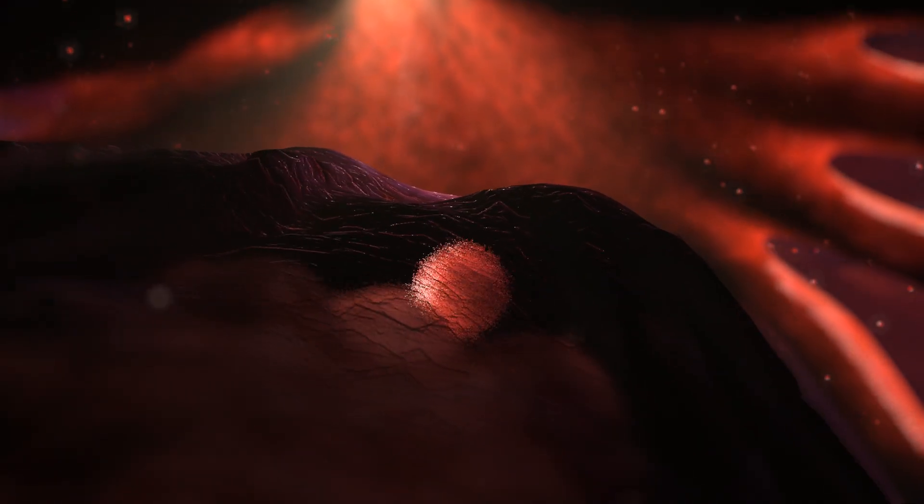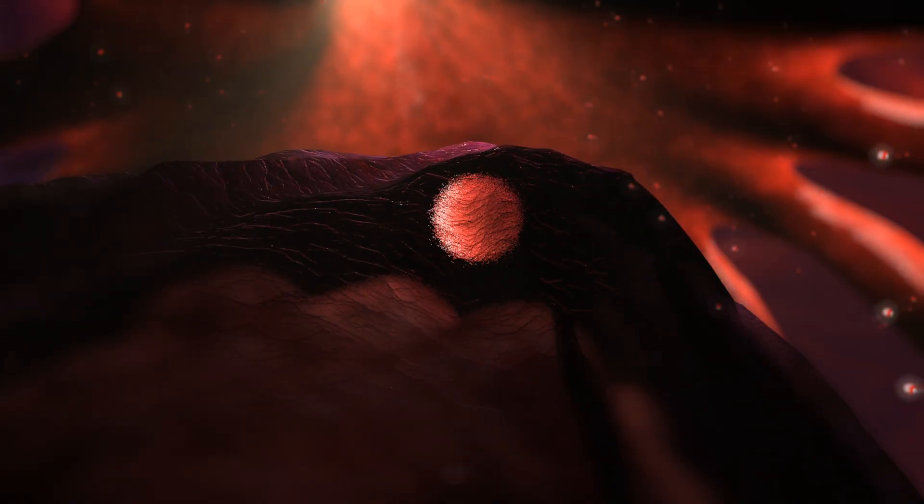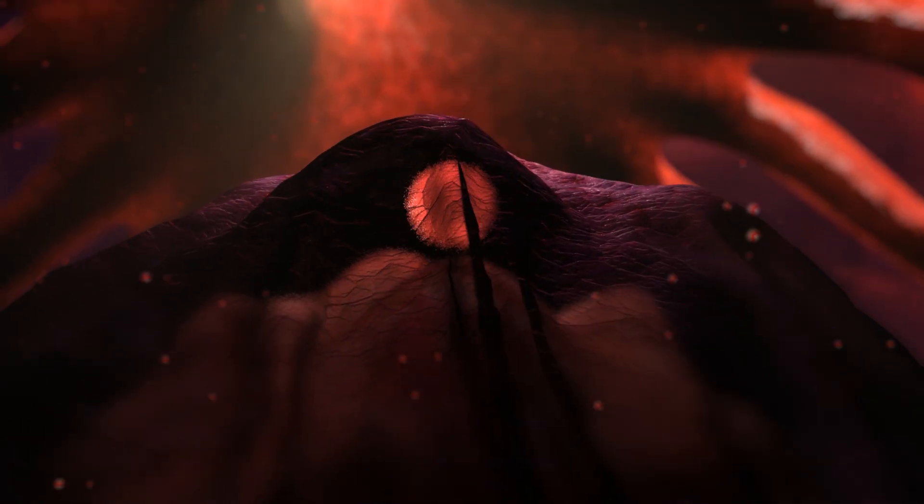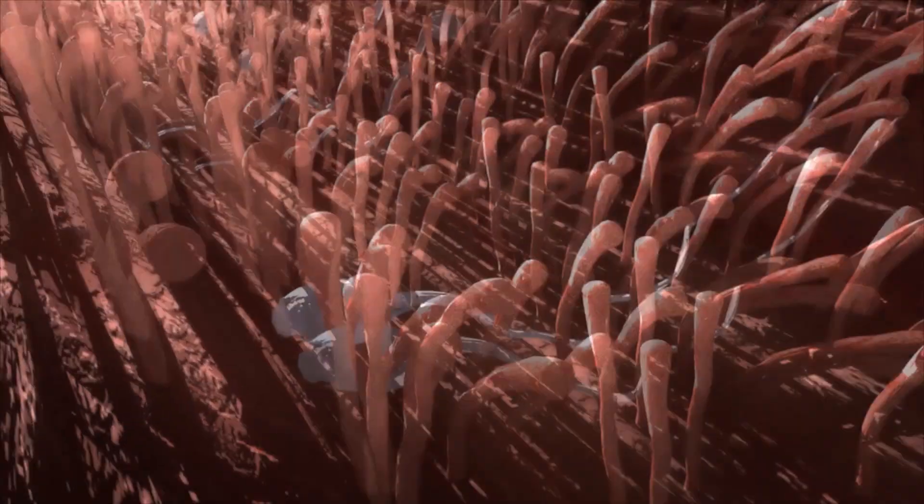The egg cell does not leave the ovary, so there is no ovulation. That is why fertilization cannot occur. This way, they prevent pregnancy before it is established.